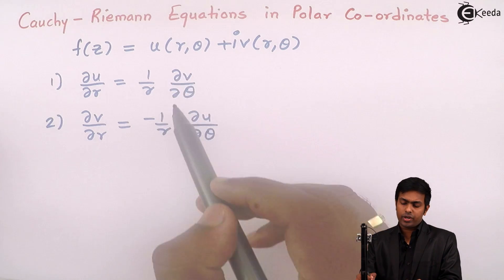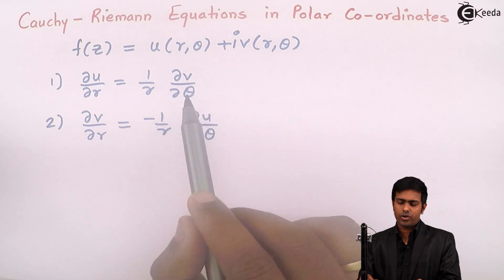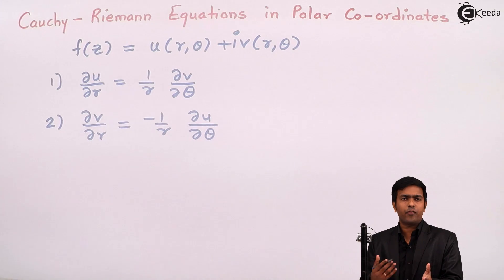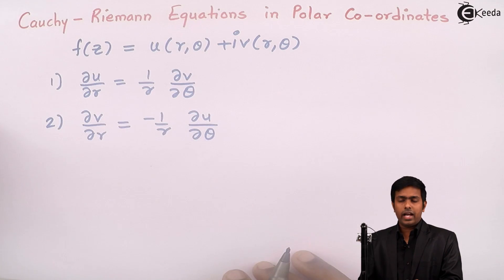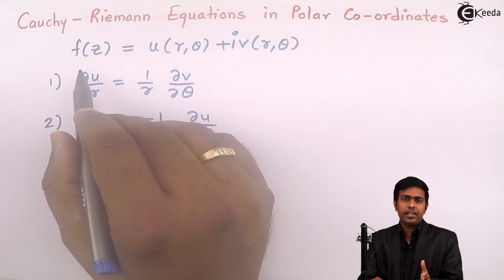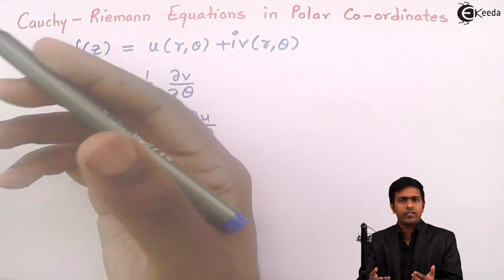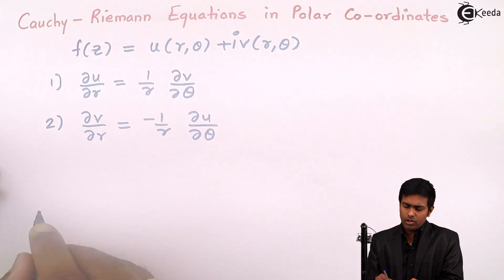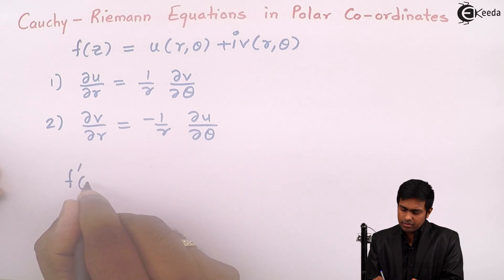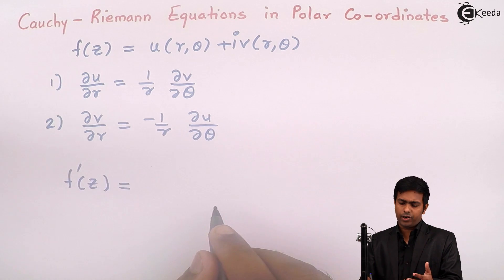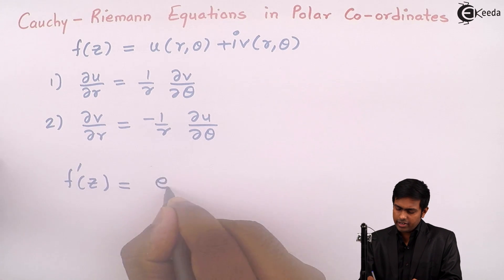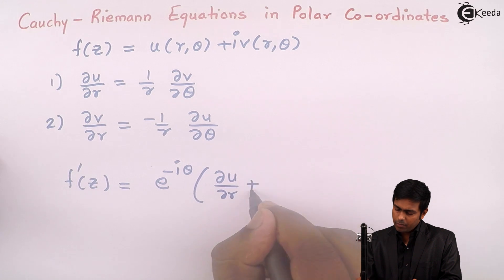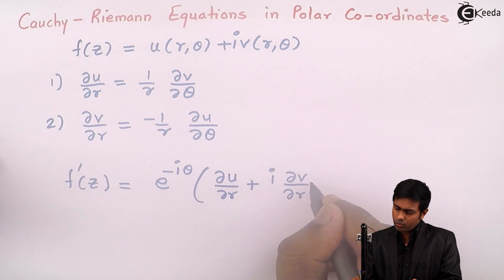If we prove that these two equations are satisfied, then we say that the Cauchy-Riemann equation is satisfied and therefore f(z) is an analytic function. If f(z) is analytic, we can also find the derivative of such an analytic function using a standard formula. The formula to get f'(z) is: e^(−iθ) times (∂u/∂r + i · ∂v/∂r).